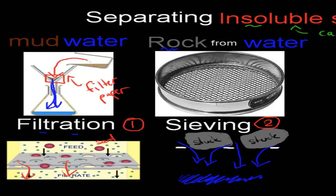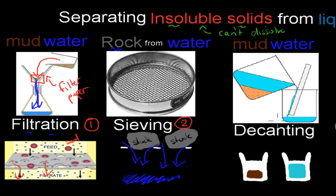Now, the third way that we can separate insoluble solids from liquids is a process called decanting. Now, remember, I said with anything that is insoluble, so it does not dissolve in water, what's going to happen eventually is it's going to go to the bottom of the container.